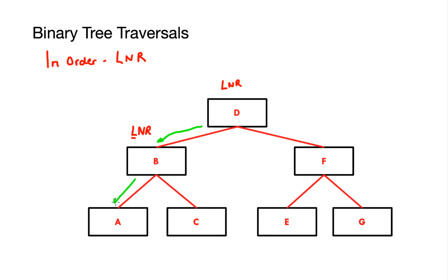I go down to A. I rewrite my rule — left, node, right — and check the left subtree of A: there is nothing there. I go back up to A and write the node down. Then I traverse the right subtree — there's nothing there either. That means I've completed all the rules at node A.